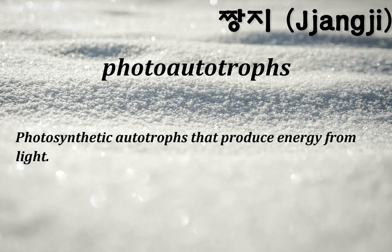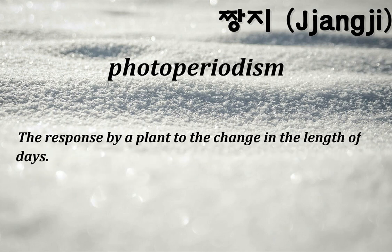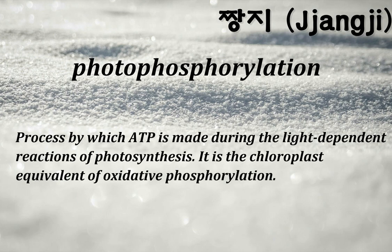Photoautotrophs: photosynthetic autotrophs that produce energy from light. Photolysis: process by which water is broken up by an enzyme into hydrogen ions and oxygen atoms; occurs during the light reactions of photosynthesis. Photoperiodism: the response by a plant to the change in the length of days. Photophosphorylation: process by which ATP is made during the light-dependent reactions of photosynthesis; it is the chloroplast equivalent of oxidative phosphorylation.